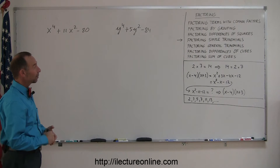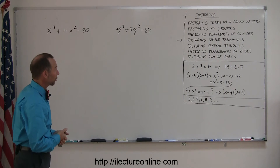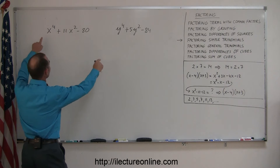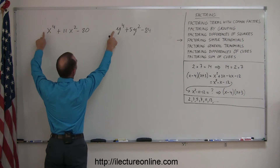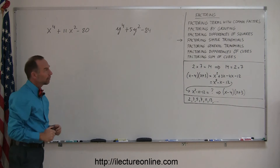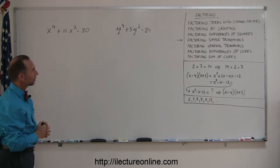Here are a few more examples on how you do factoring with simple trinomials. Simple trinomials are where the first term has a 1 as a coefficient, but if you look carefully at these two, they look a little different.